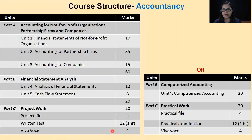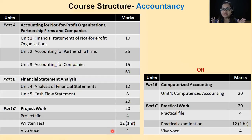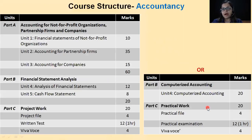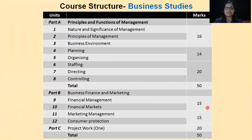Just making the file will not fetch you marks in Project. If you really want to score well in Project, you need to understand what you are making. Part A is your compulsory part, but in Part B you can either choose Financial Statement Analysis or Computerized Accounting. Under Part C, you have Practical Work. This is about the core structure of Accountancy.